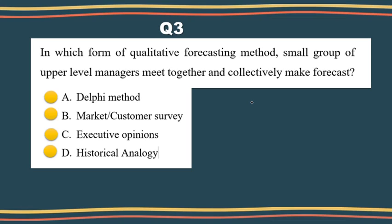In this method there are three different types of participants during forecasting. At the first level, we look at the decision-makers. Decision-makers usually consist of five to ten experts who will be making the actual forecast.